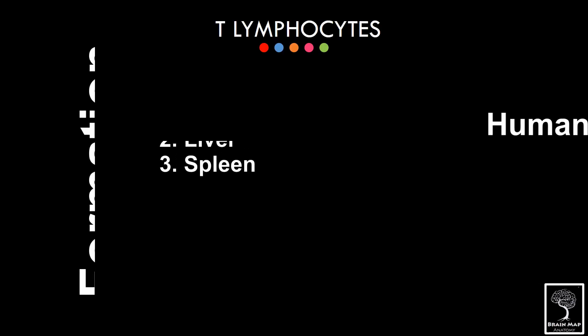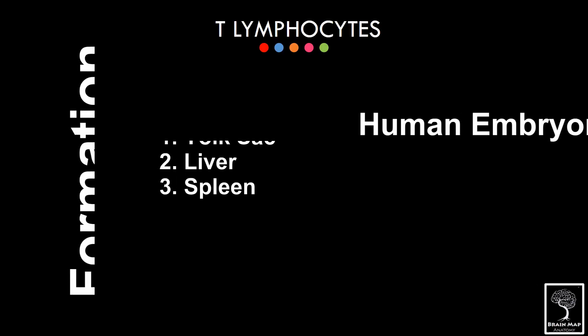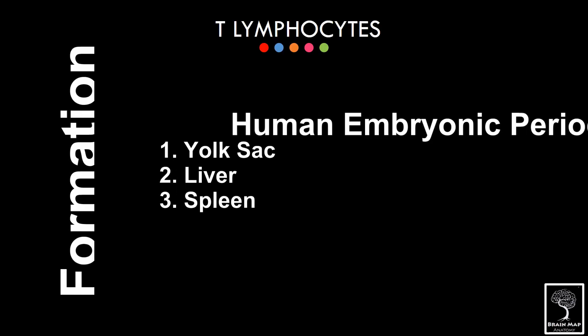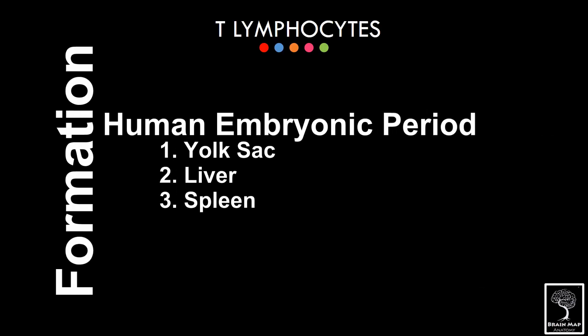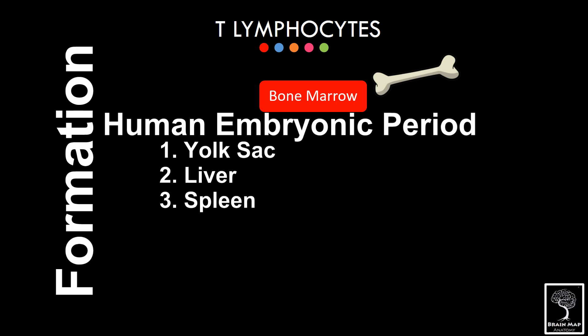During the human embryonic period, lymphocytes are derived from mesenchymal cells present in the wall of the yolk sac, and also from the liver and spleen. These stem cells migrate to bone marrow.